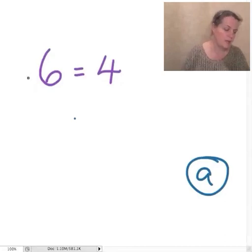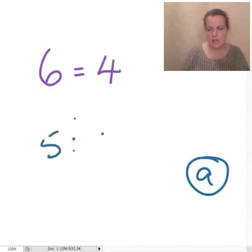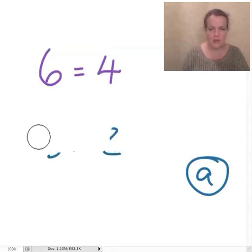Five ginger cakes weighs as much as two Victoria sponges. So five to two. No, that's halved. That isn't halved, is it? So it's not that.